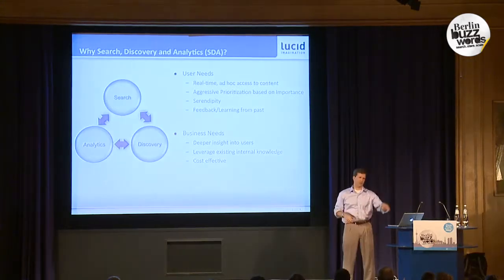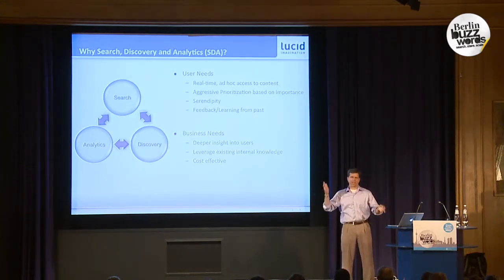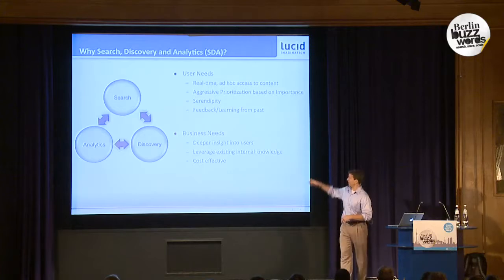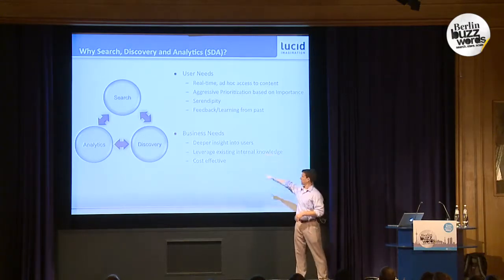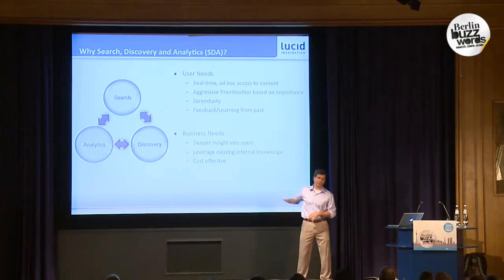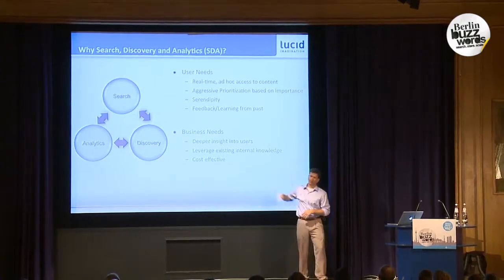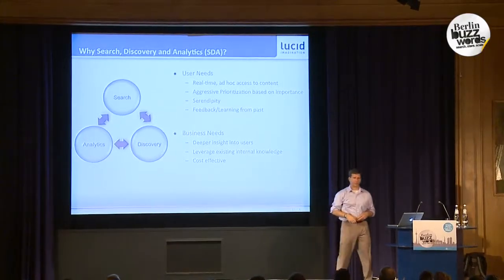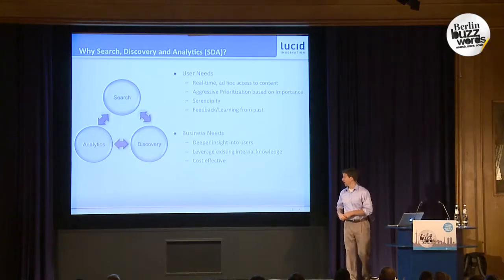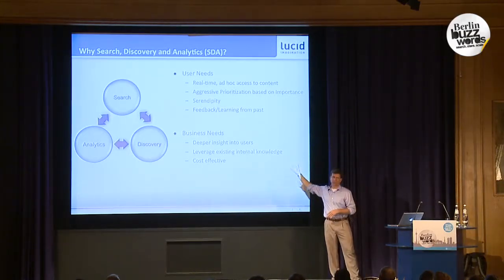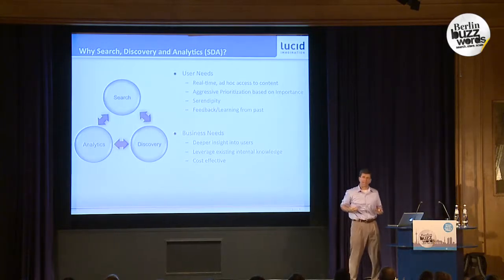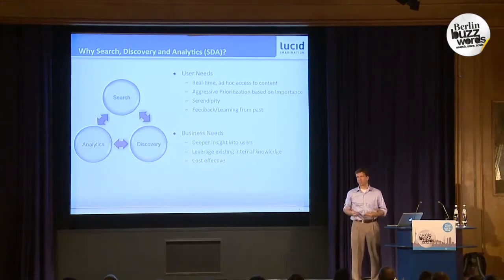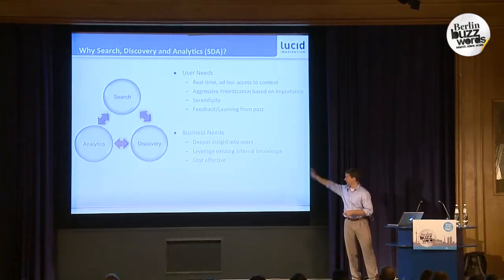You need this notion of importance, and with that notion of importance also comes serendipity. The business often wants much deeper insight into their users and into their content — they want to know where to make investments. Should I be spending more money cleaning this up? It also needs to be done in a cost-effective way that leverages existing internal knowledge. For me, that internal knowledge is often the fact that people all know how to do search — they know how to interact with that text box and enter queries.